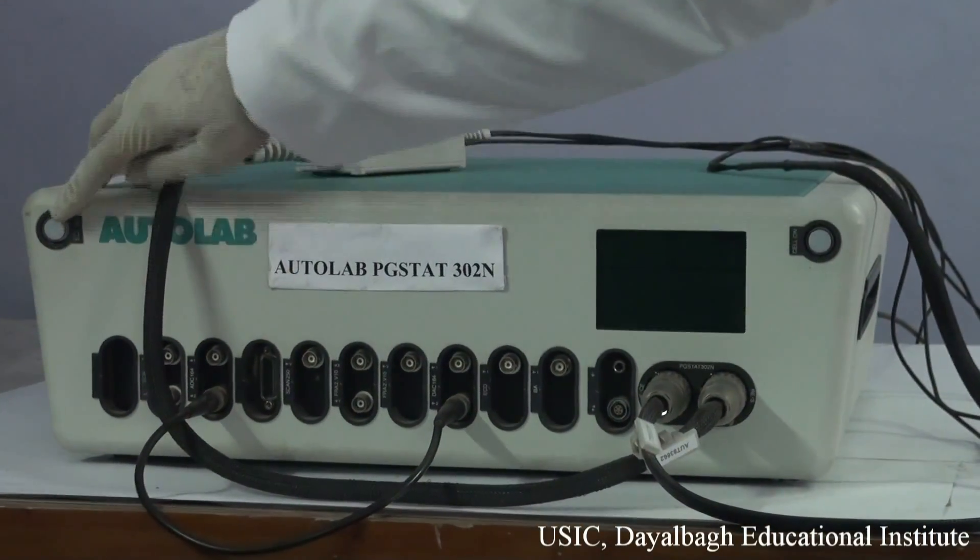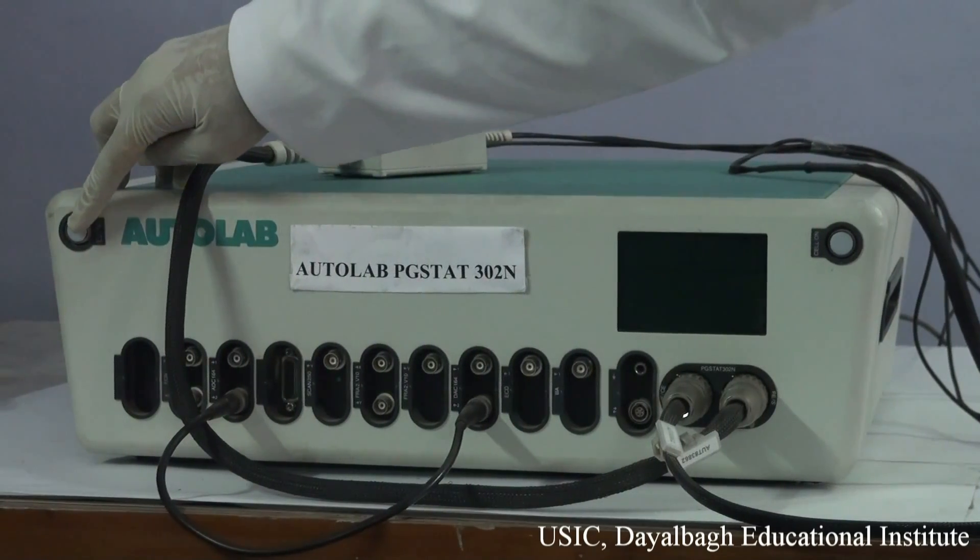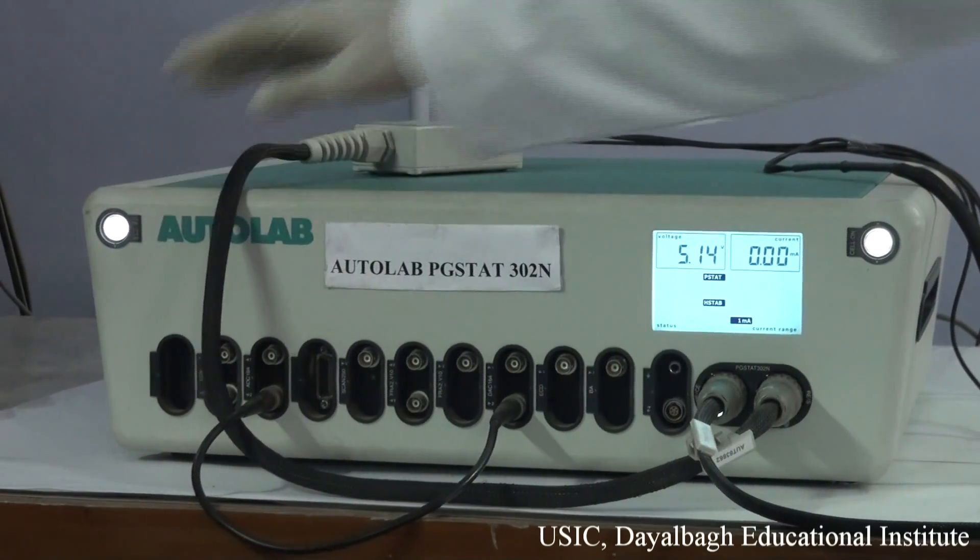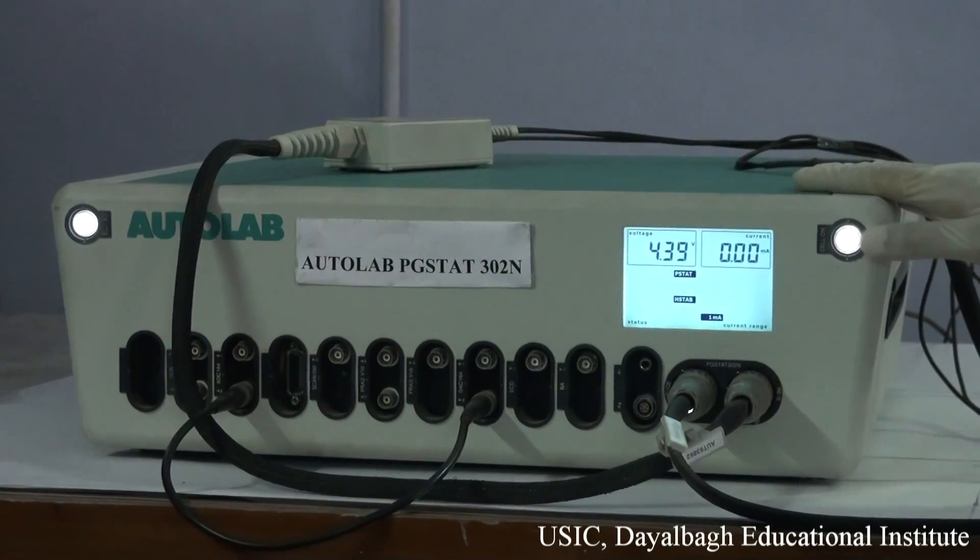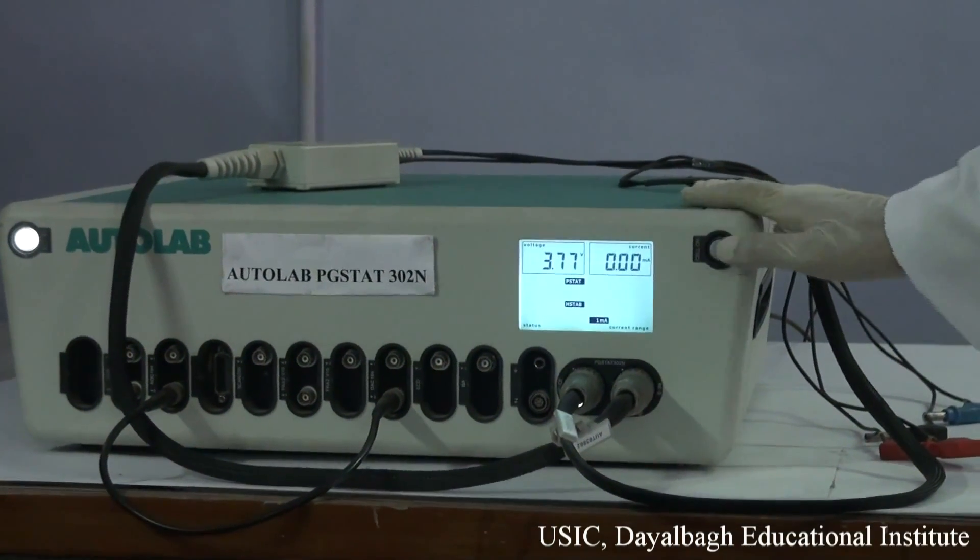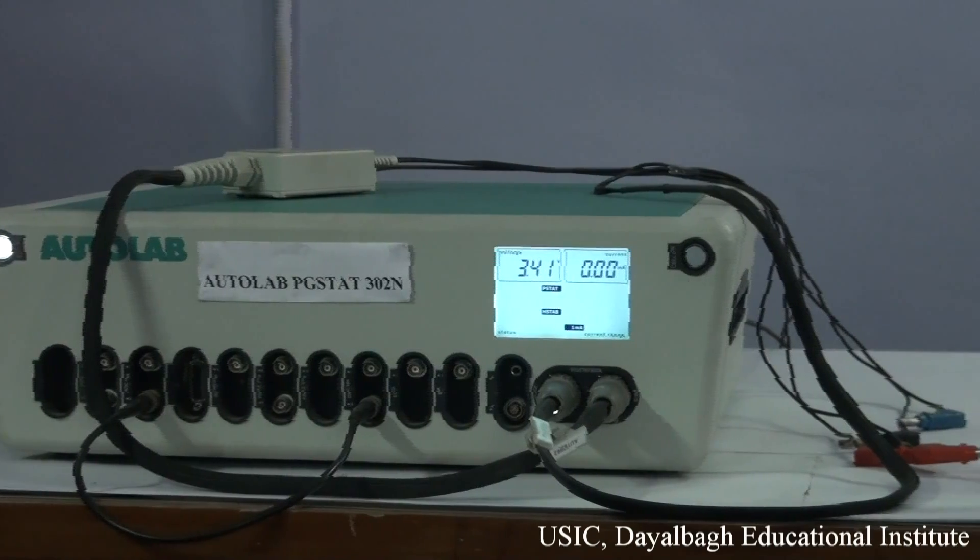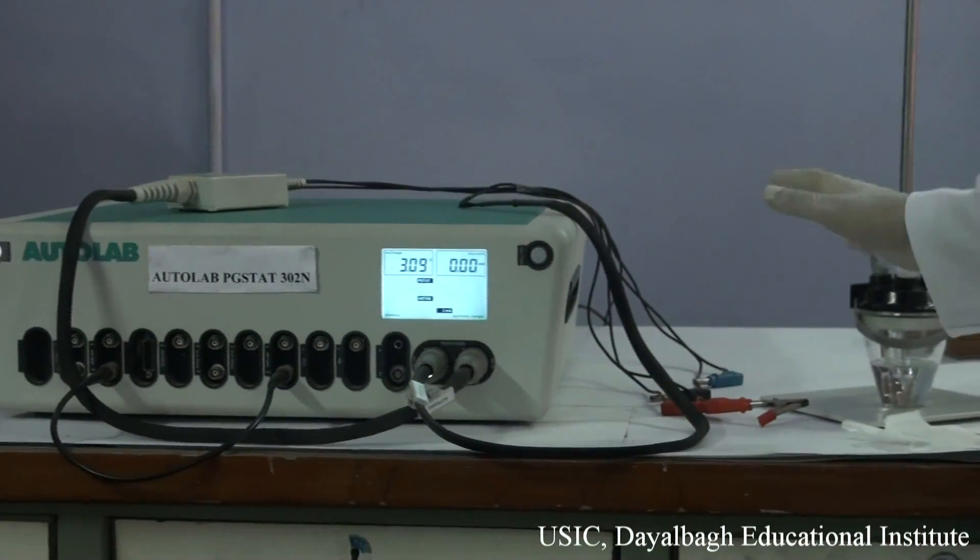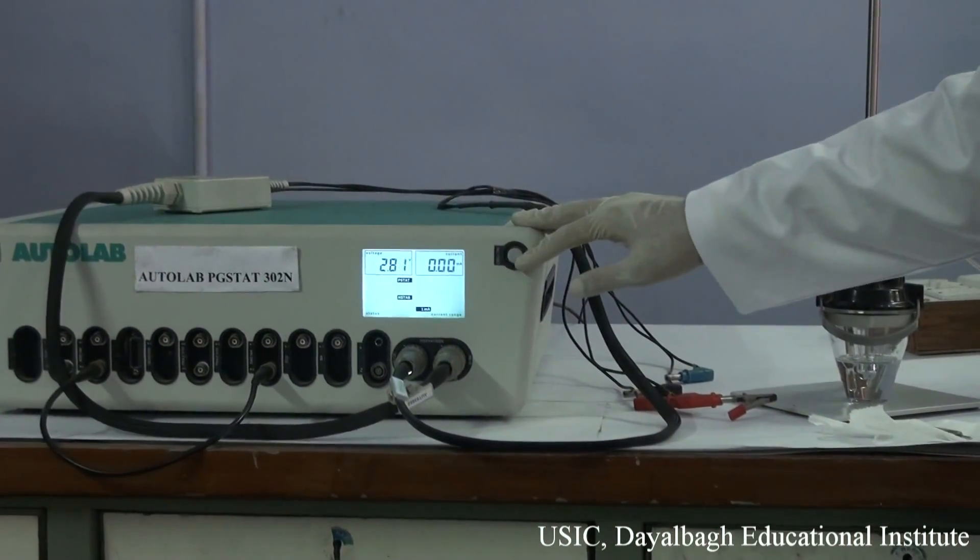First of all, we switch on the main button of the instrument. Switch off this one as it connects to the electrode system. When we set up the three electrode system, after that we will press this button.